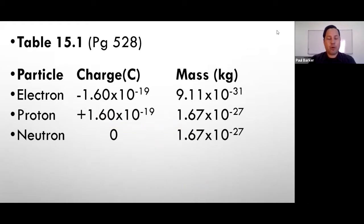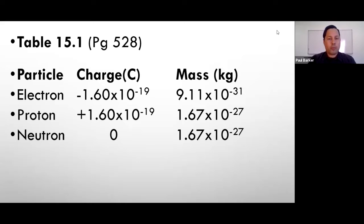Let's take a look at table 15.1, found on page 528 of your textbook. The table gives the charge and mass of three particles: the proton, the electron, and the neutron. The electron has a charge of negative 1.6 times 10 to negative 19 coulombs and a mass of 9.11 times 10 to negative 31 kilograms. The proton has the same magnitude of charge but positive: positive 1.6 times 10 to negative 19 coulombs, and a mass of 1.67 times 10 to negative 27 kilograms. The neutron has no charge — it's neutral — but its mass is similar to the proton: 1.67 times 10 to negative 27 kilograms.